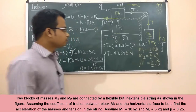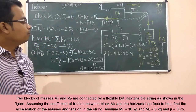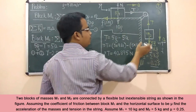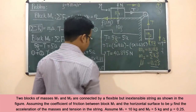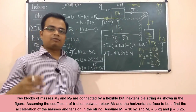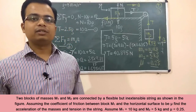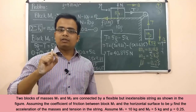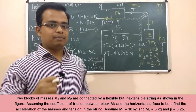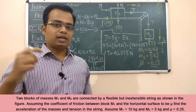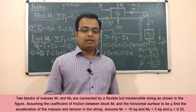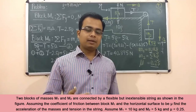So the tension in the string is 40.875 Newtons and the acceleration of the system is 1.635 m/s² — block m2 moves downward and block m1 moves to the right at this acceleration. If you've got any doubt, write it in the comments below. If this tutorial added value, share, like, and subscribe. This is Manas signing off — take care, have a great day, keep learning.